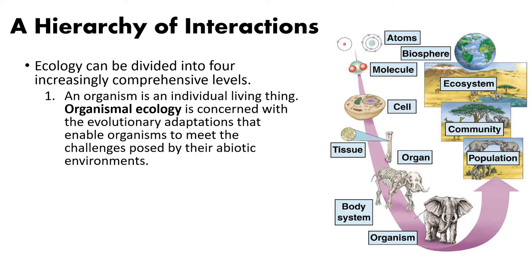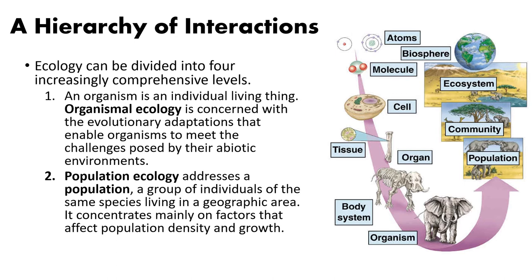One step up is population ecology, where we look at a population — a group of organisms of the same species living in the same area. We look mainly at how this population changes over time: does it increase or decrease in numbers? What's the birth rate, the death rate, how long do they live? Population ecology encompasses the organismal level.